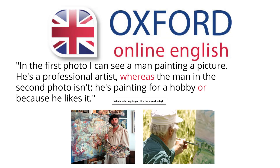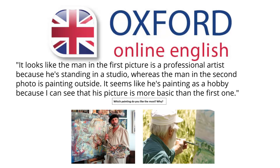So how should it be done? Look at this answer: 'It looks like the man in the first picture is a professional artist because he's standing in a studio, whereas the man in the second photo is painting outside. It seems like his painting is a hobby because I can see that his picture is more basic than the first one.' You can see how using 'looks like' and 'seems like' shows that you're speculating about the photos as well as comparing them. This would get you a higher score in your FCE speaking exam.